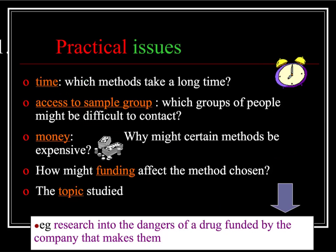This links directly to funding. How might the funding affect both the method and the topic being studied? If you've got lots of funding, you can probably choose to do a research method that involves a team of researchers, or one that might take a long time to complete. Topics will be influenced by practical issues, so things like how you look will influence your research, particularly if you're thinking about covert observation.